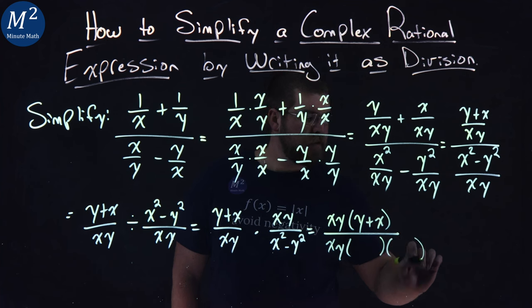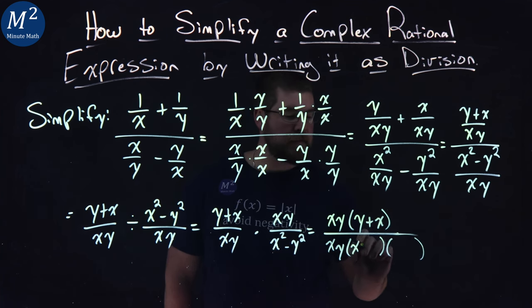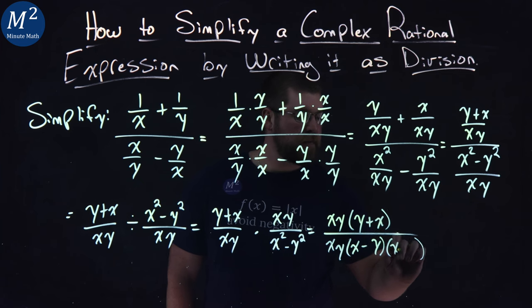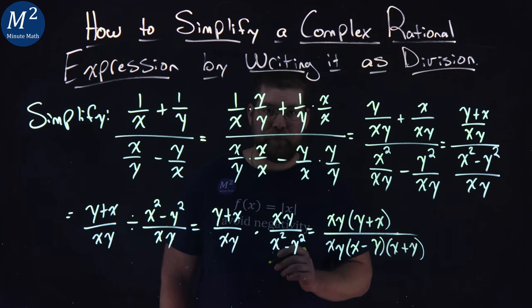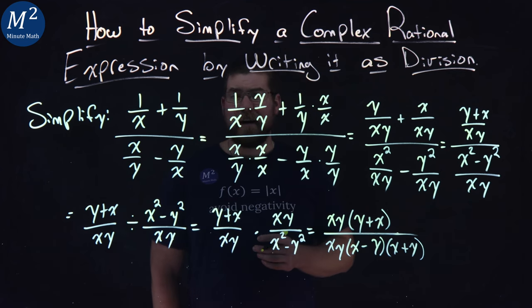Now, I'm going to factor the second denominator. x squared minus y squared is an x minus a y. And an x plus a y. All right. Hopefully, you can remember that. Now, this is where it gets kind of fun.